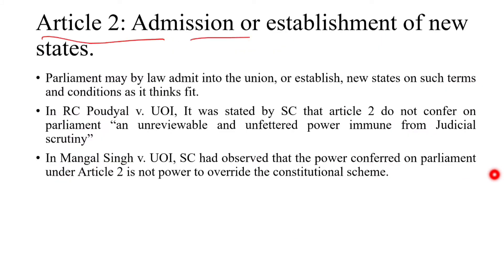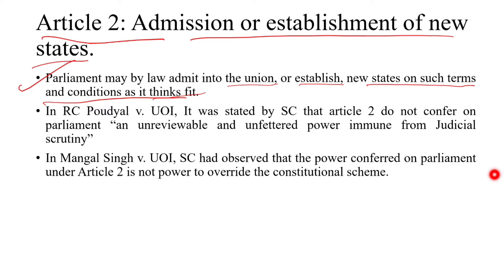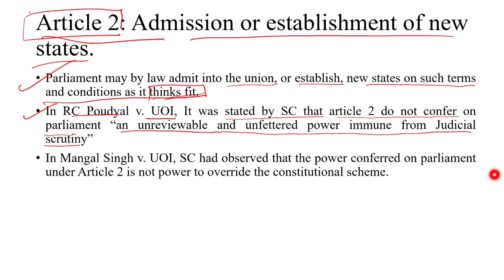Article 2 deals with admission or establishment of new states. Parliament may by law admit into the Union or establish new states on such terms and conditions as it thinks fit. But does parliament have the power to impose arbitrary terms? In RC Paudwal v. Union of India, the Supreme Court held that Article 2 does not confer on parliament an unreviewable and unfettered power immune from judicial scrutiny. So 'as it thinks fit' under Article 2 is subject to judicial review, and parliament cannot take arbitrary decisions.